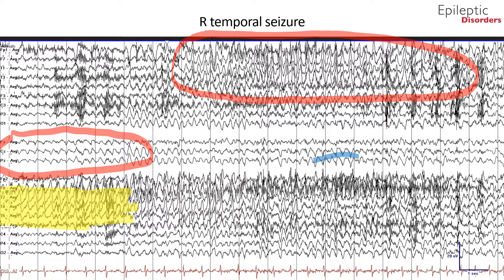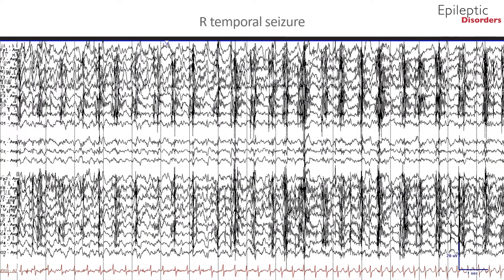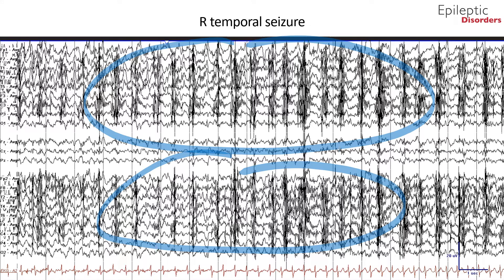Note there is myogenic artifact outlined in blue representing clinical manifestations of the seizure. The third page of the seizure shown in average montage shows obscuration of the background by rhythmic myogenic artifact representing clinical manifestations as the patient experiences chewing movements and oral automatisms. Again noted at the bottom of the page in the EKG channel, there is a gradual increase in heart rate.